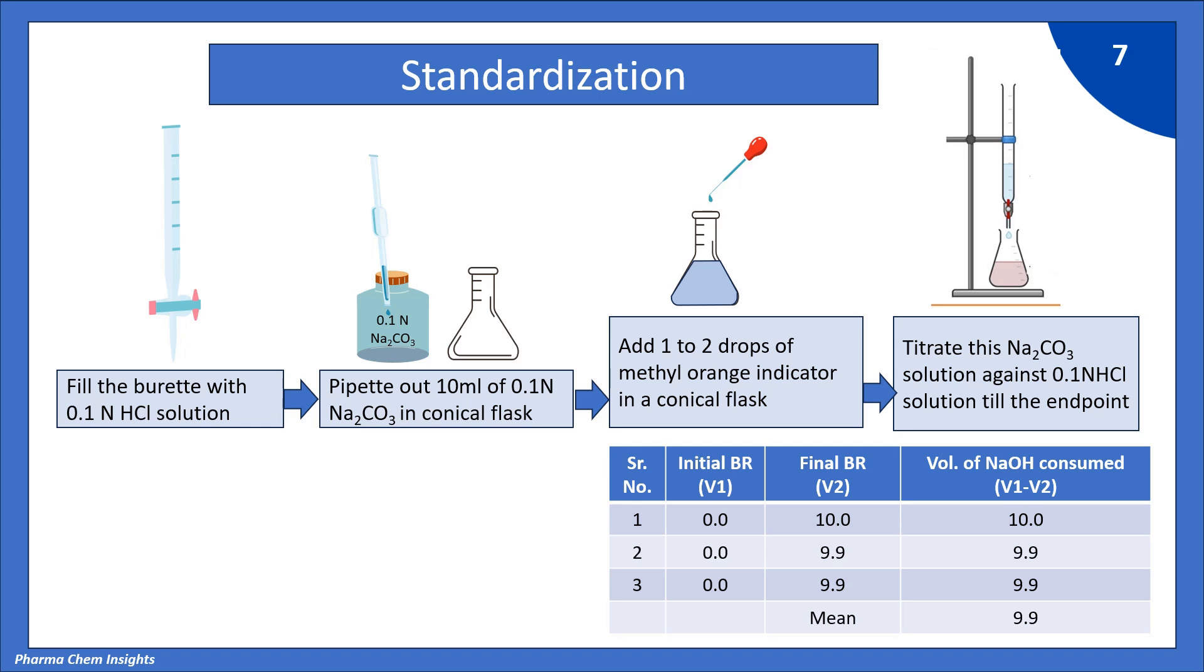Let us assume we got 3 consecutive readings: first is 10.0, second is 9.9, and third is 9.9. If we calculate the mean, we get 9.9 as the mean reading.